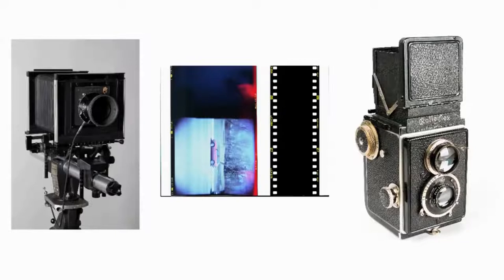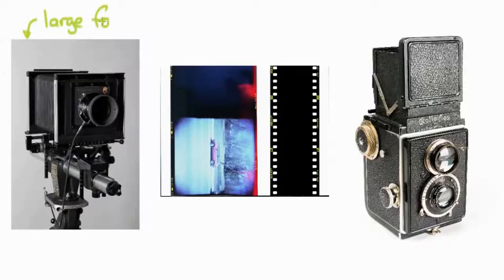Moving up from there, cameras became very quickly much more complex. This camera over here to the left is an example of one of the early styles. This particular camera is actually a little newer, but this is what's called a large format camera. All that has to do with is the film size.